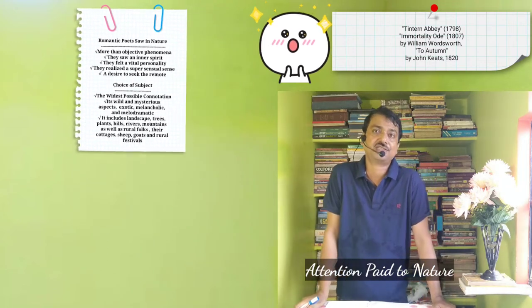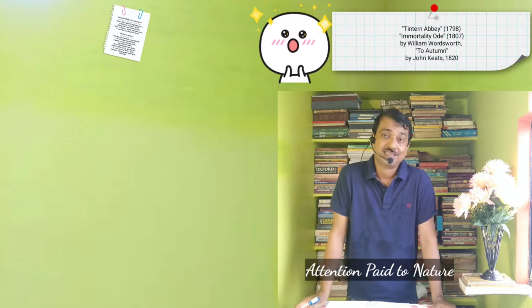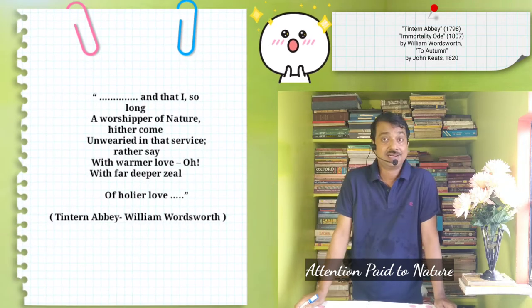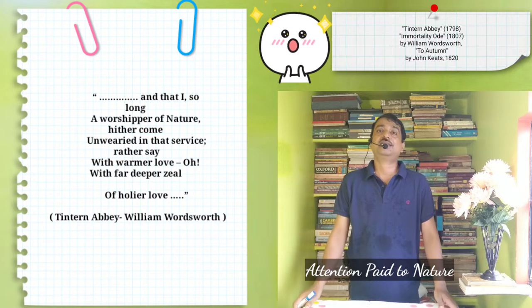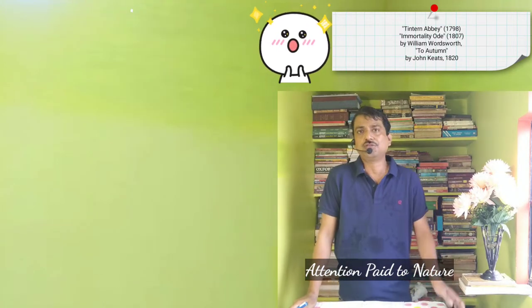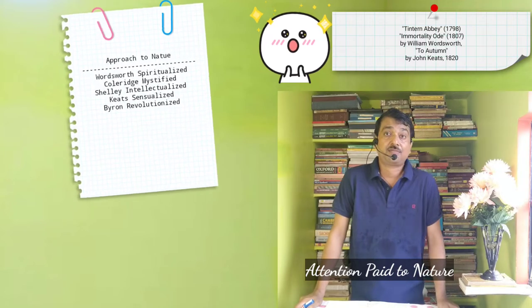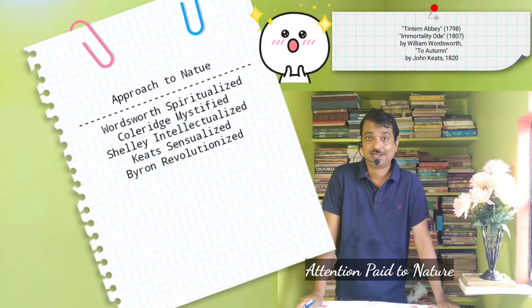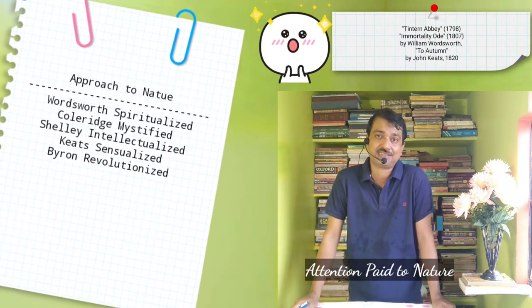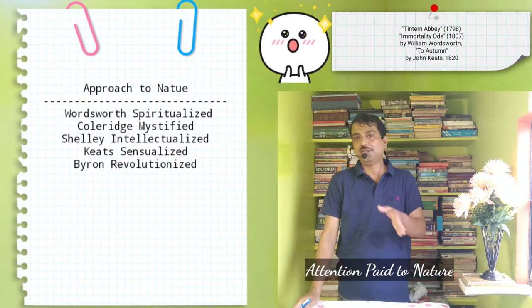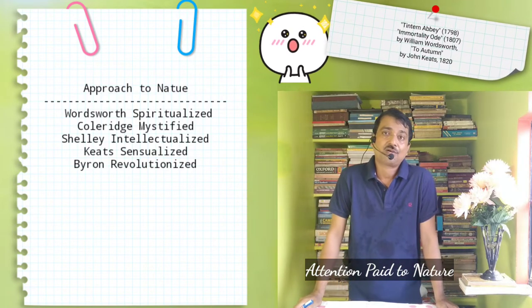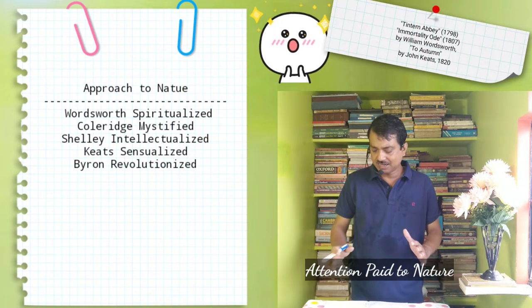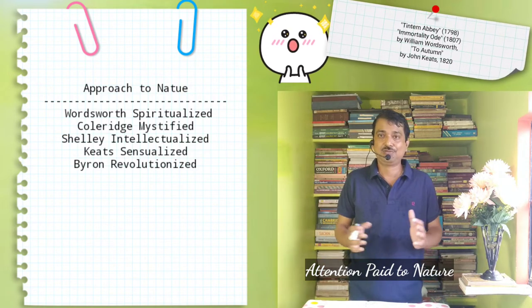Wordsworth, the worshipper and high priest of nature, says: I, so long a worshipper of nature, here come and wed in that service with warmer love, oh with far deeper zeal of holier love. Keats also represents a return to nature. He loves nature for the sensuous pleasures it gives, not for any spiritual significance or intellectual message — where Wordsworth spiritualized and Shelley intellectualized, Keats finds a kind of expression through nature of sensualism.